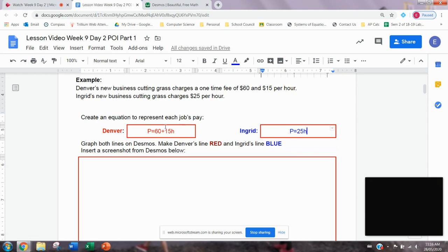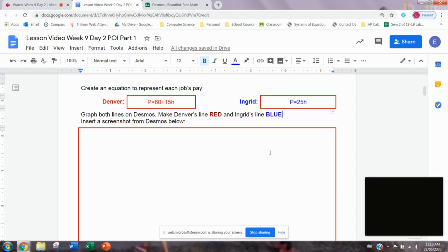I'm going to go over to Desmos now and graph these because the next step says graph both lines on Desmos, make Denver's line red and Ingrid's line blue. And then we'll put a screenshot from Desmos into our assignment. So just another note in this week's assignment for day two and day three, you're not going to be doing any pencil and paperwork, you're going to put all of your answers in the red boxes in this Google Doc. So everybody will have their own Google Doc attached to the assignment and you'll just fill in all the work here and submit the Google Doc. So I'm going to go over to Desmos and I'm going to graph Denver and Ingrid.